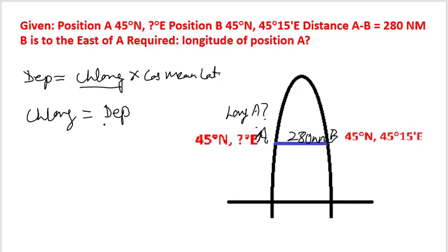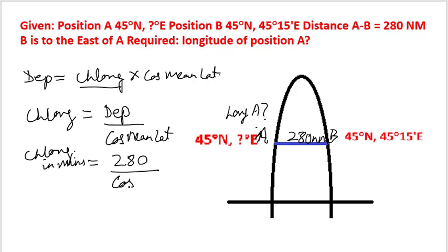So change in longitude is equal to departure divided by cosine mean latitude. Change in longitude in minutes equals 280 divided by cosine 45, which equals 396 minutes, or 396 divided by 60 gives us 6 degrees 36 minutes of change in longitude.